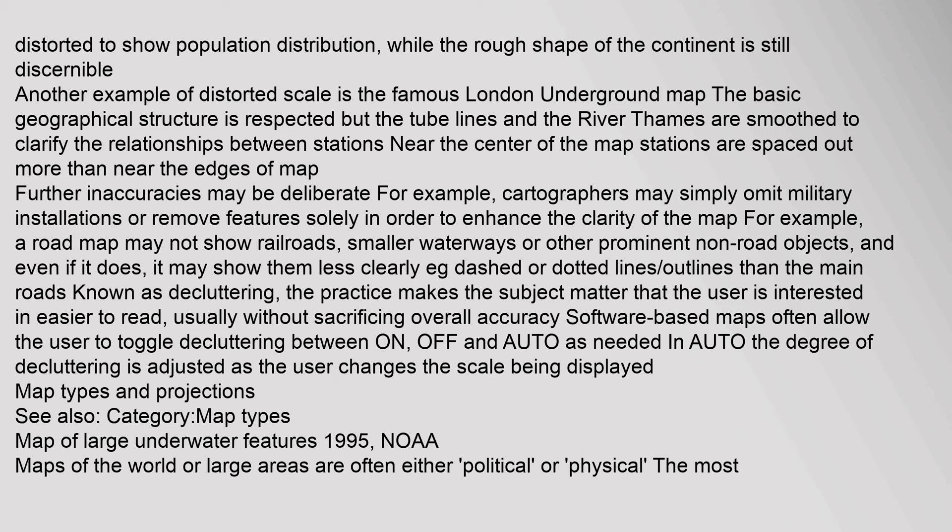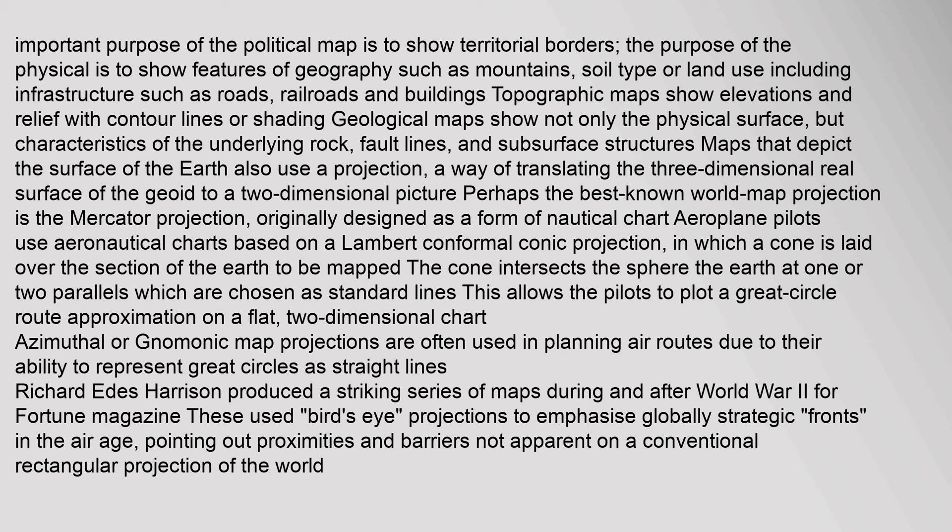Maps of the world or large areas are often either political or physical. The most important purpose of the political map is to show territorial borders. The purpose of the physical map is to show features of geography such as mountains, soil type, or land use including infrastructure such as roads, railroads and buildings. Topographic maps show elevations and relief with contour lines or shading. Geological maps show not only the physical surface, but characteristics of the underlying rock, fault lines, and subsurface structures.